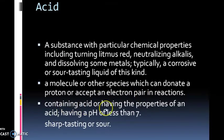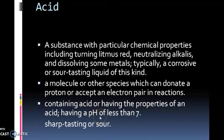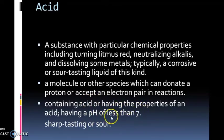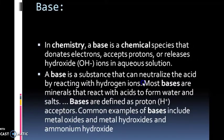A substance containing acid and having the properties of an acid has a pH of less than 7. Some examples include substances with pH values such as 5.5, 5.6, 4.5, and 3.4, which are all classified as acidic chemicals.